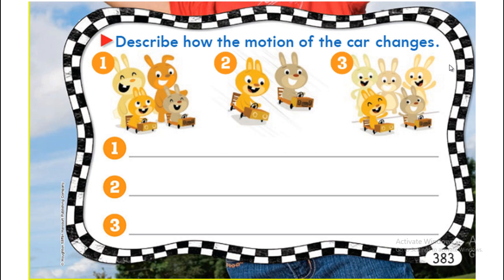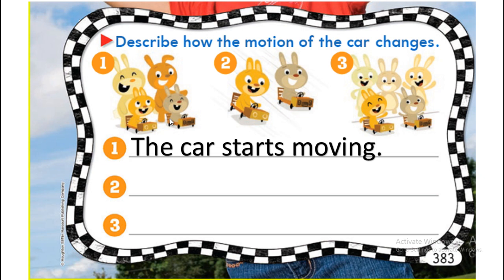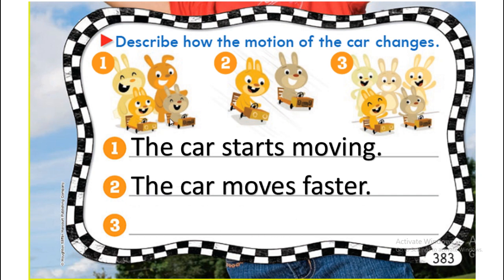Describe how the motion of the car changes. Here we have a story: two rabbits are pushing their children down the hill — they are sitting in two cars. When they give them a push, the car starts moving. In number two, now they are going down the hill, the car is going to start moving faster. In number three, they reach the bottom of the hill, so the car is going to stop at the end.